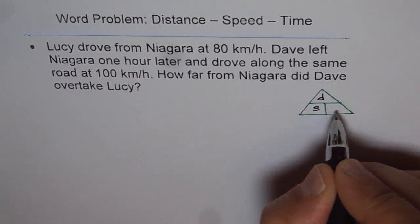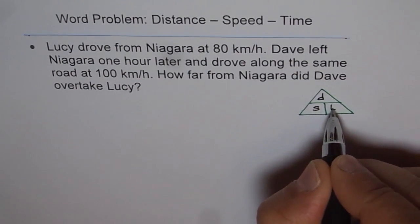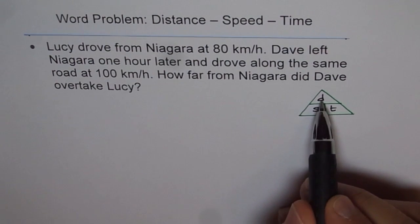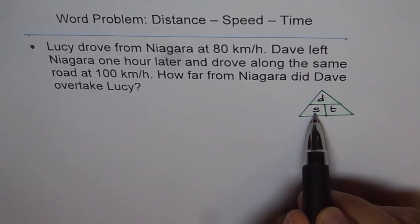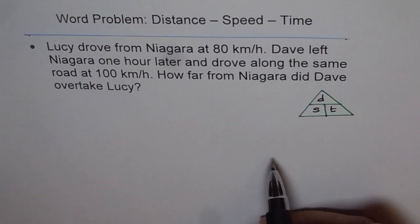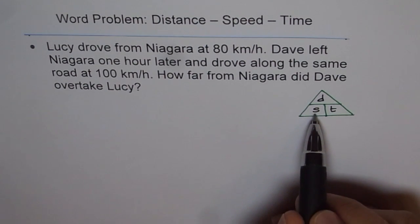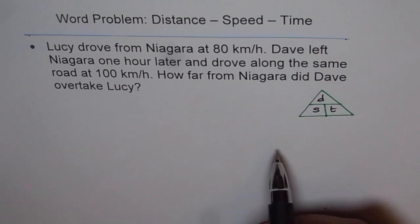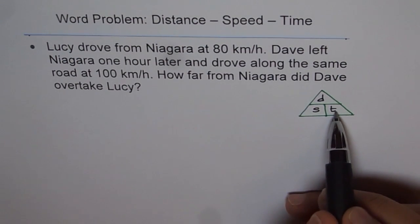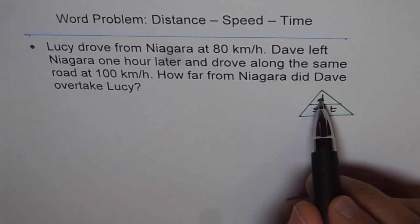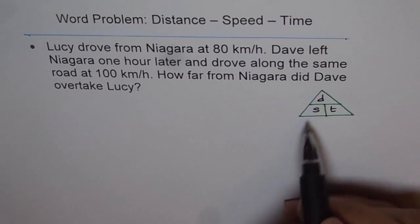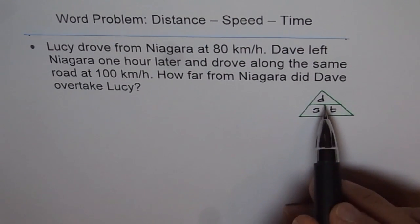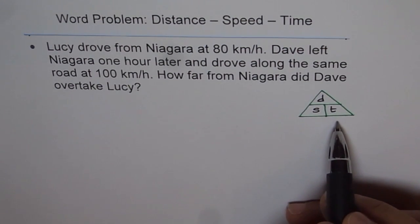Here, distance D equals speed multiplied by time. Speed equals distance divided by time. Similarly, time equals distance divided by speed. That is how these three quantities are related.